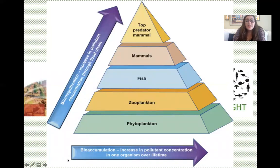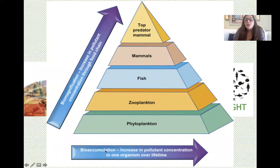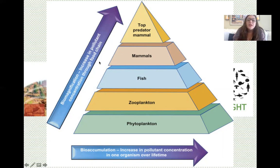Bioaccumulation is the increase in pollutant concentration in one organism over a lifetime. For example, a fish born in a contaminated lake may start with a small amount of DDT, but if it stays in that contaminated lake its entire life, the bioaccumulation of DDT in that fish will be higher over time. However, bioaccumulation is just one problem — the real issue for us as humans is biomagnification.